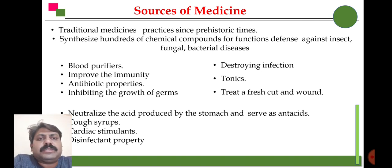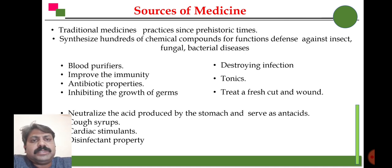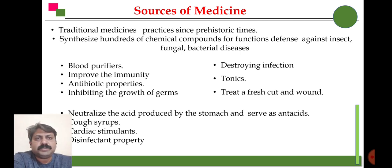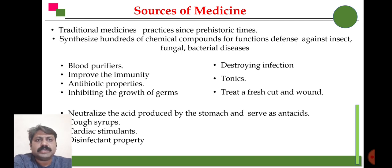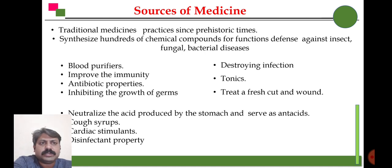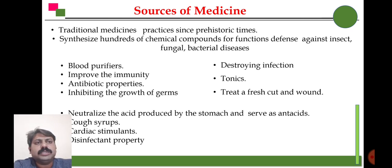Next are the sources of medicine. We have been using medicinal plants from ancient times, and most plant species have important medicinal properties. Plants serve as blood purifiers, plants are useful to increase immunity, plants have antibiotic properties, they regulate the growth of germs, they destroy infections, they are useful as tonics, they neutralize acid produced in the stomach serving as antacids, plants are a source of cough syrup, and plants are a source of cardiac stimulants and also have disinfectant properties.